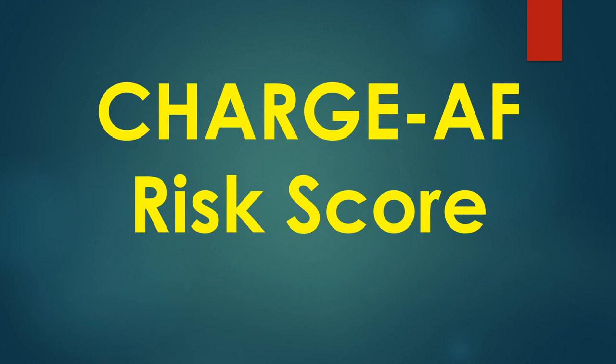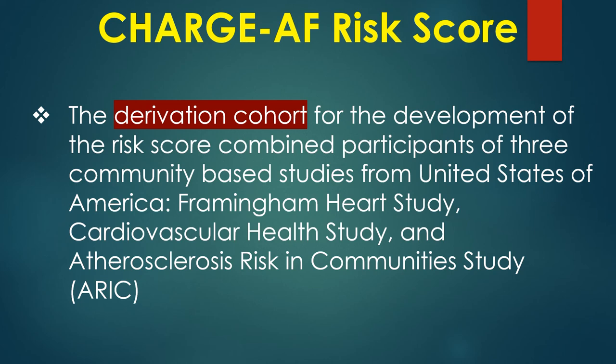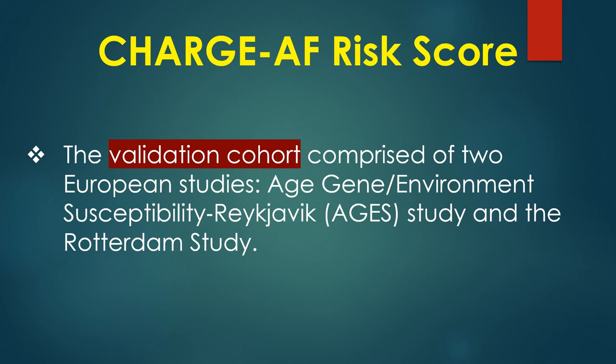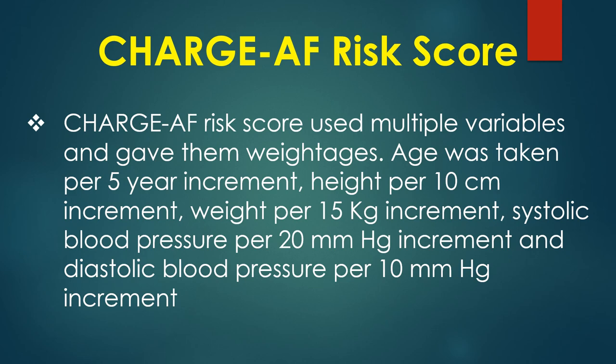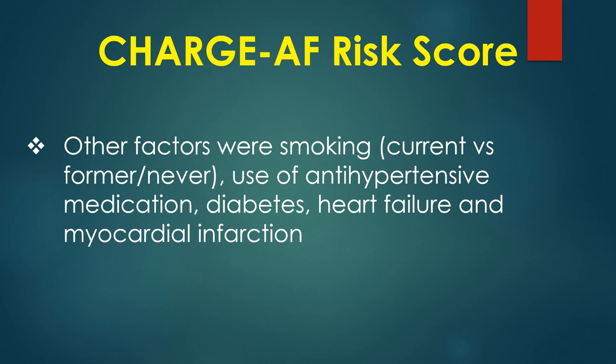Discussion on CHARGE-AF risk score to predict the risk of atrial fibrillation. The derivation cohort combined participants from three community-based US studies: the Framingham Heart Study, Cardiovascular Health Study, and Atherosclerosis Risk in Communities study (ARIC). The validation cohort comprised two European studies: the AGES study and Rotterdam study. CHARGE-AF risk score used multiple variables with weightages, including age per 5-year increment, height per 10 cm increment, weight per 15 kg increment, systolic blood pressure per 20 mmHg increment, and diastolic blood pressure per 10 mmHg increment.